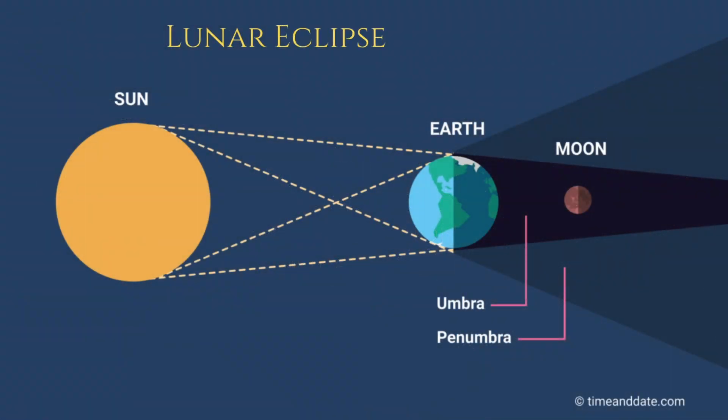A lunar eclipse can only happen during a full moon. That's when the Earth, the Sun and the Moon all line up, with the Earth in the middle casting its shadow onto the Moon. But not every full moon gives us a lunar eclipse. Why is that?